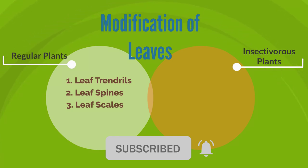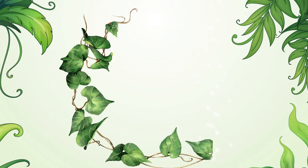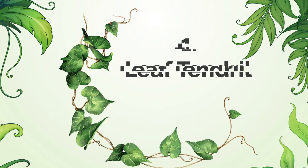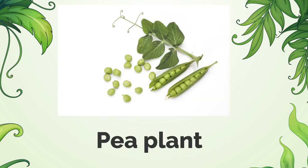For insectivorous plants, we will discuss three: pitcher plant, bladderwort, and Venus fly trap. Leaf tendrils provide support to weak stems. If you observe a pea plant, you can find thin thread-like coiled structures called tendrils. These tendrils stretch out and twine around an object to provide support to the weak stems.